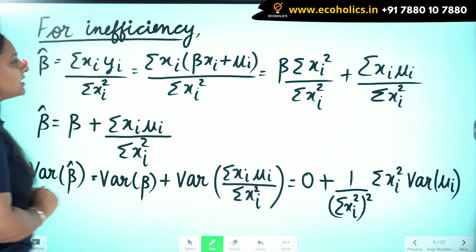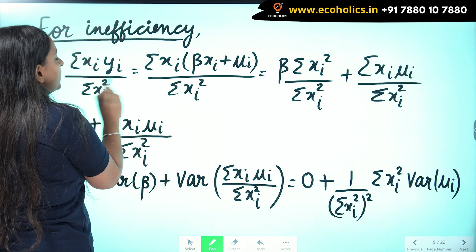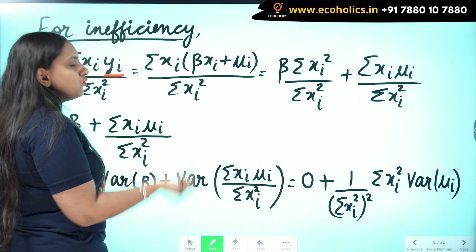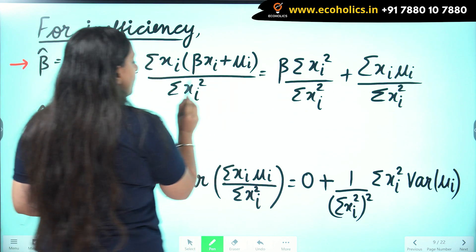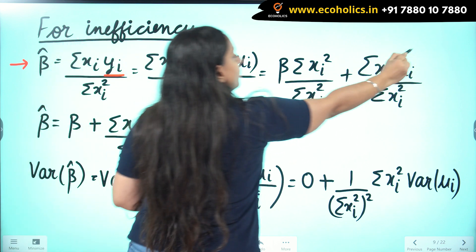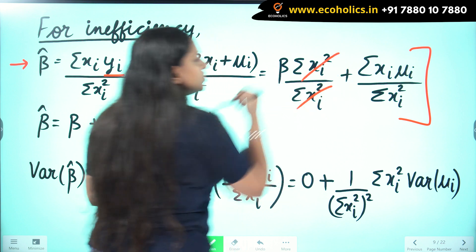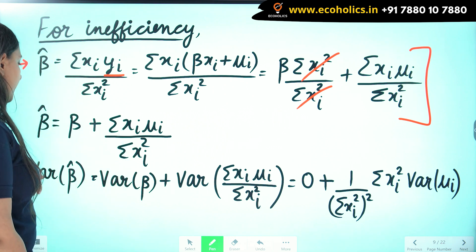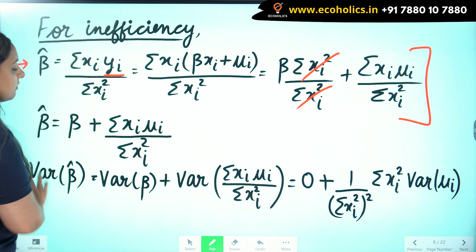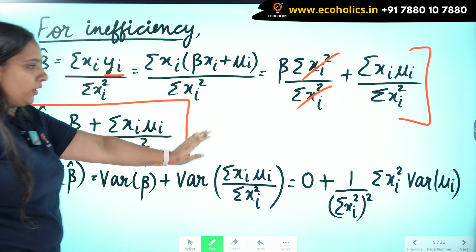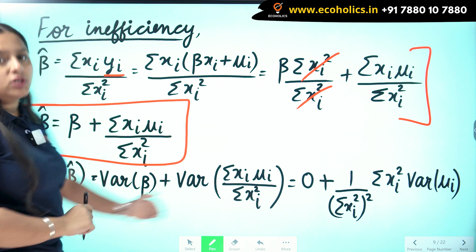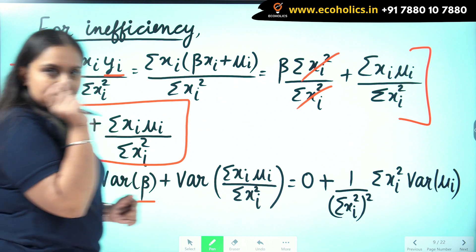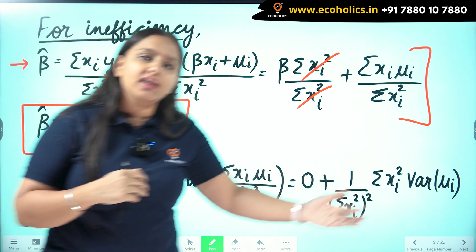I use the same formula: summation xi yi upon summation xi squared, and substitute the deviation form of yi as beta xi plus mu i. Opening this up gives beta times summation xi squared upon summation xi squared plus summation xi mu i upon summation xi squared. After cancellation I am left with beta plus summation xi mu i upon summation xi squared.